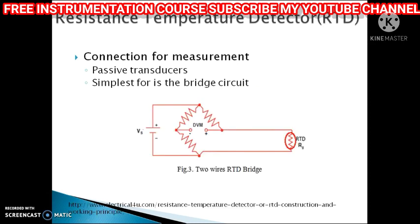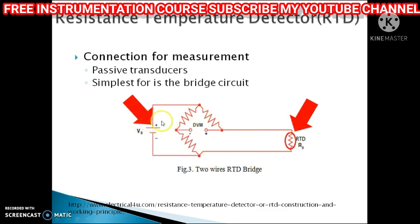A bridge circuit is a simple circuit for measuring an unknown resistance by connecting it to three known resistances in the circuit and applying a voltage source. By supplying a constant electric current and measuring the voltage, the RTD resistance can be calculated.